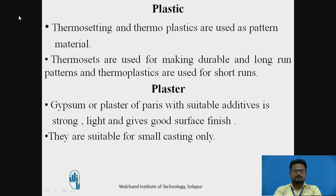The next material is Plastic. Thermosetting and thermoplastic materials are used as pattern materials. Thermosets are used for making durable, long-run patterns, while thermoplastics are used for short runs. The commonly used thermosets are epoxy and polystyrene resins. Plastics offer advantages of lightness, good surface finish, and wear resistance. Next is Plaster — this pattern is made of gypsum or plaster of Paris with suitable additives. It is strong, light, and gives good surface finish, but is suitable for small castings only.